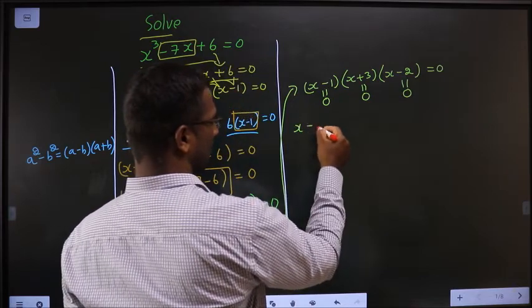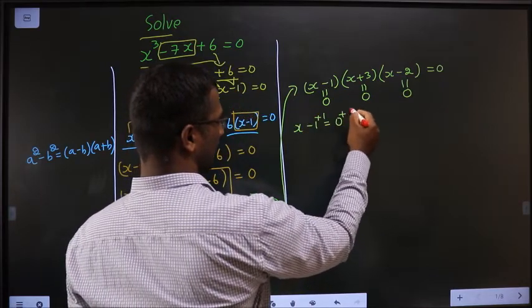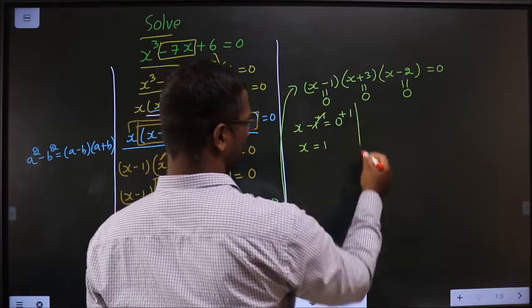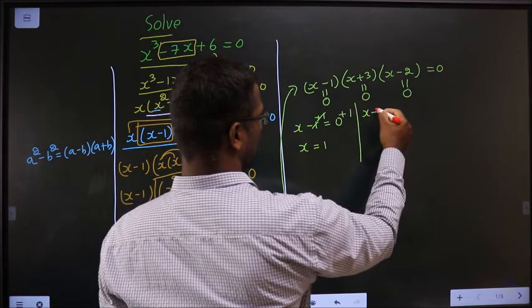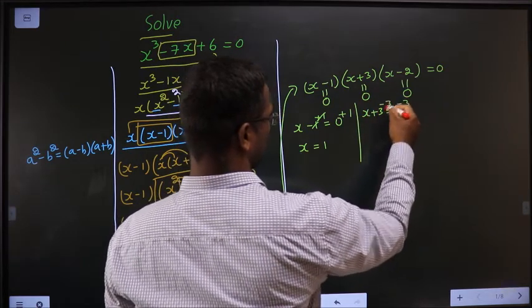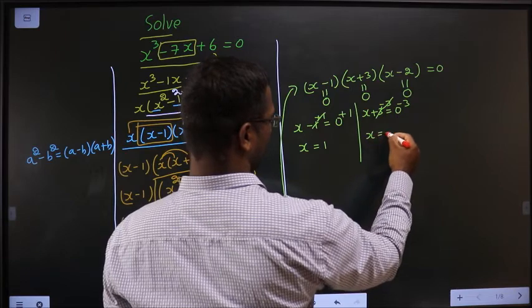So if x minus 1 equal to 0, add 1 on both sides, so x equal to 1. If x plus 3 equal to 0, take minus 3 on both sides, so x equal to minus 3.